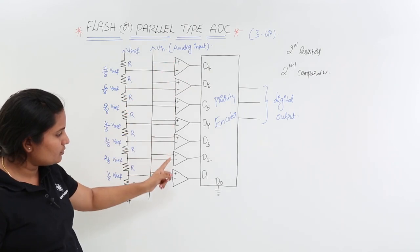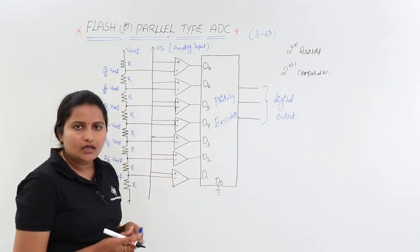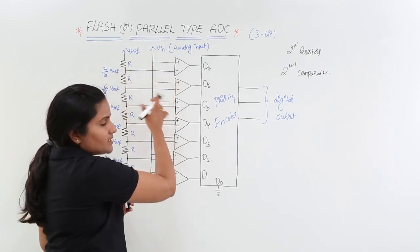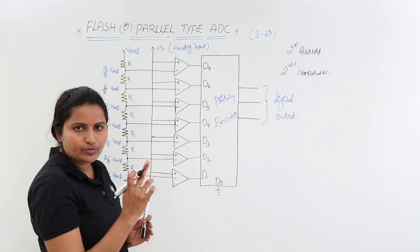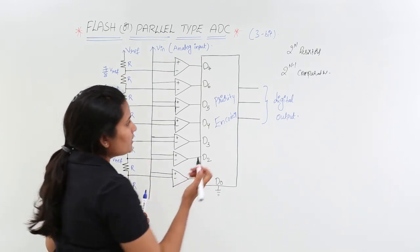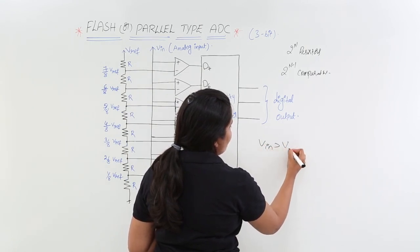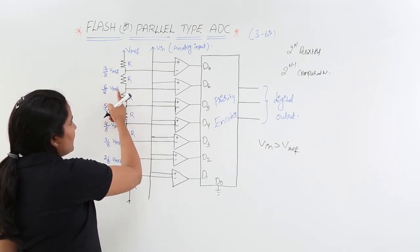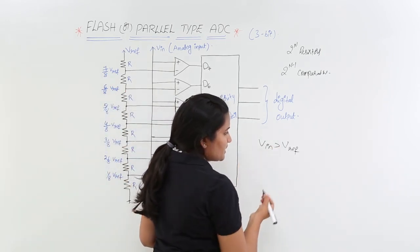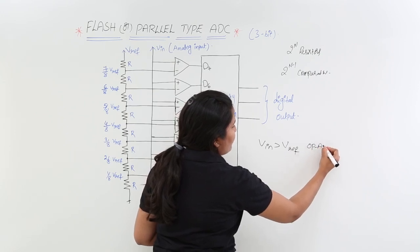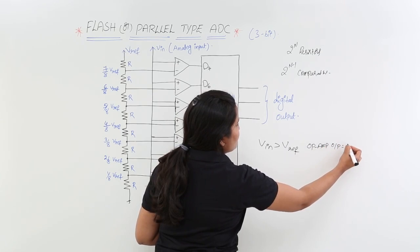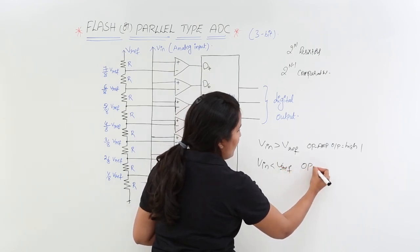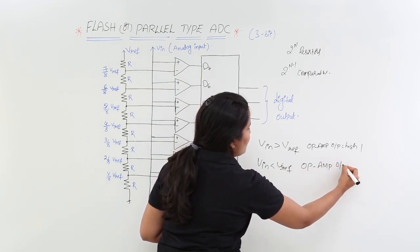The reference voltage is given to the negative input of each comparator, while the analog input voltage is continuously given to the positive input of every op-amp. For a given input voltage, if the input is higher than the reference voltage at a particular point, the op-amp output is 1; otherwise it is 0. So if V-in is greater than V-reference, the op-amp output equals high (1); if V-in is less than V-reference, the output equals low (0).